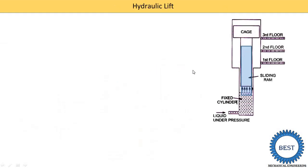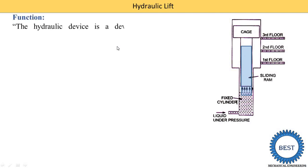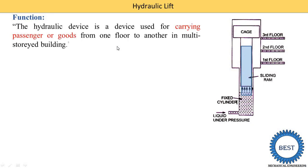You are all aware that the lift is generally used for transmitting passengers or different luggage from the ground floor to the first floor, second floor, and third floor. The hydraulic device is used for carrying passengers or goods from one floor to another in a multi-storey building, already used in different apartments, malls, and complexes.